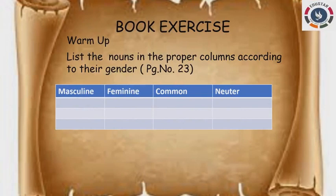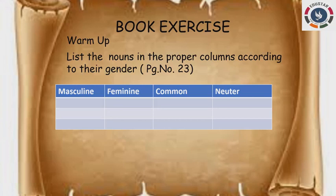Kids, first we will see the book back exercise of chapter 6, gender. We will start with the warm-up exercise: list the nouns in the proper columns according to their gender, given on page number 23. They have given a list of genders in a box — not segregated. What you have to do is separate them into masculine, feminine, common, and neuter gender and write in the corresponding boxes.